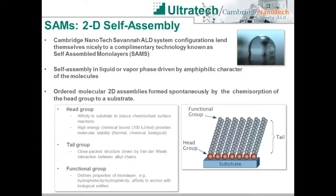As I near the end of the webinar, I would like to transition into a slightly different topic. Self-assembled monolayers, commonly referred to as SAMS, are another class of coatings that can be deposited on a substrate to change its surface properties. We at Cambridge Nanotech are quite interested in SAMS, as it is a complementary technique to ALD, offering typically a different set of material properties. The Cambridge Nanotech Savannah system, while designed for ALD, lends itself nicely to vapor phase processing for SAMS coatings, and as will be shown, ALD films can improve the quality of SAMS coatings.